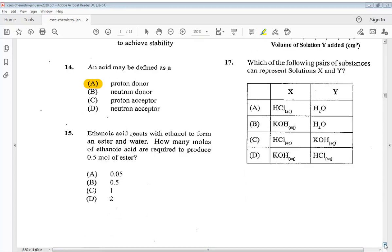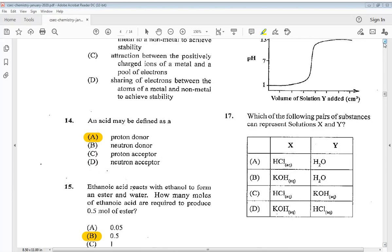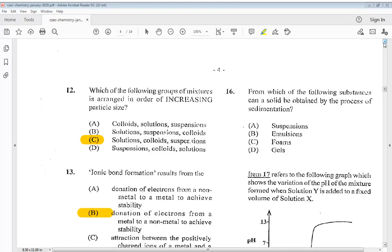15. Ethanoic acid reacts with ethanol to form an ester and water. How many moles of ethanoic acid are required to produce 0.5 mol of ester? So it would be 0.5, B. 16. From which of the following substances can a solid be obtained by the process of sedimentation? A. Suspensions, B. Emulsions, C. Foams, D. Gels. So the answer is A. Suspensions.